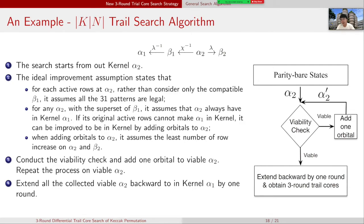Let's look at the concrete example to see how K|N trail search algorithm works. This algorithm starts from out kernel state α2. The ideal improvement assumption states that for each active row at state α2, rather than considering only the compatible β1, we take all the 31 patterns into consideration. It assumes all the 31 patterns are legal. For any α2 with a superset of β1, it assumes that α2 always have in kernel state α1. If its original active rows cannot make α1 in kernel, it can be improved to be in kernel by just adding orbitals to state α2. When adding orbitals to α2, it assumes the least number of row increase on state α2 and β2. After that, we conduct the viability check and add one more orbital to all the viable α2. We repeat the whole process on all the viable α2.